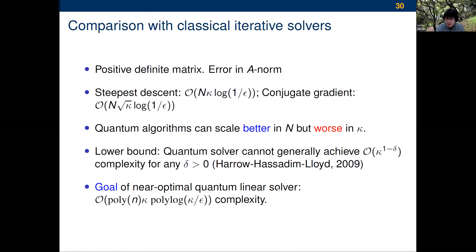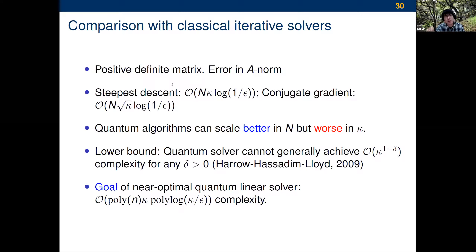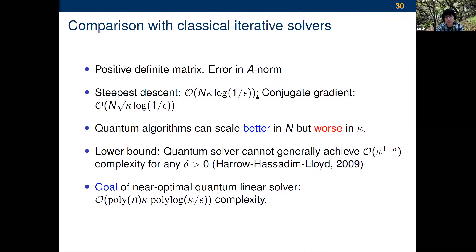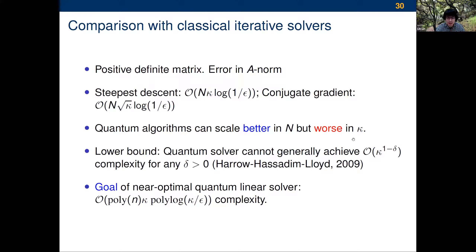Compared to classical iterative solvers — and there's no analog of Gaussian elimination in the quantum world as far as I know — for a positive definite matrix, steepest descent scales with N · kappa · log(1/epsilon) and conjugate gradient with N · √kappa · log(1/epsilon), where N = 2^n. So quantum algorithms scale better in n but much worse in kappa. There's a known lower bound showing that for generic linear systems, we do not expect a quantum linear system solver to achieve O(kappa^(1-δ)) complexity for any δ > 0. So the goal of a near-optimal quantum linear system solver is poly(n) · kappa · polylog(kappa/epsilon) — that's really the best you can get.